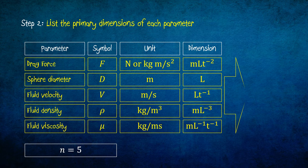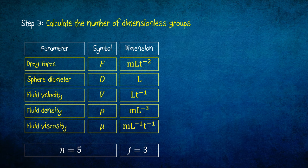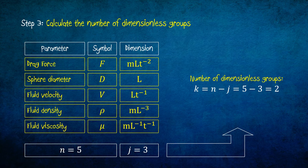Here we observe that there are only three primary dimensions involved in all parameters, which are m, L and t. Thus, j equals 3. Step 3 consists of calculating the number of dimensionless groups. Having n equals 5 and j equals 3, then the number of dimensionless groups will be 5 minus 3 or k equals 2. The two dimensionless groups are pi 1 and pi 2.